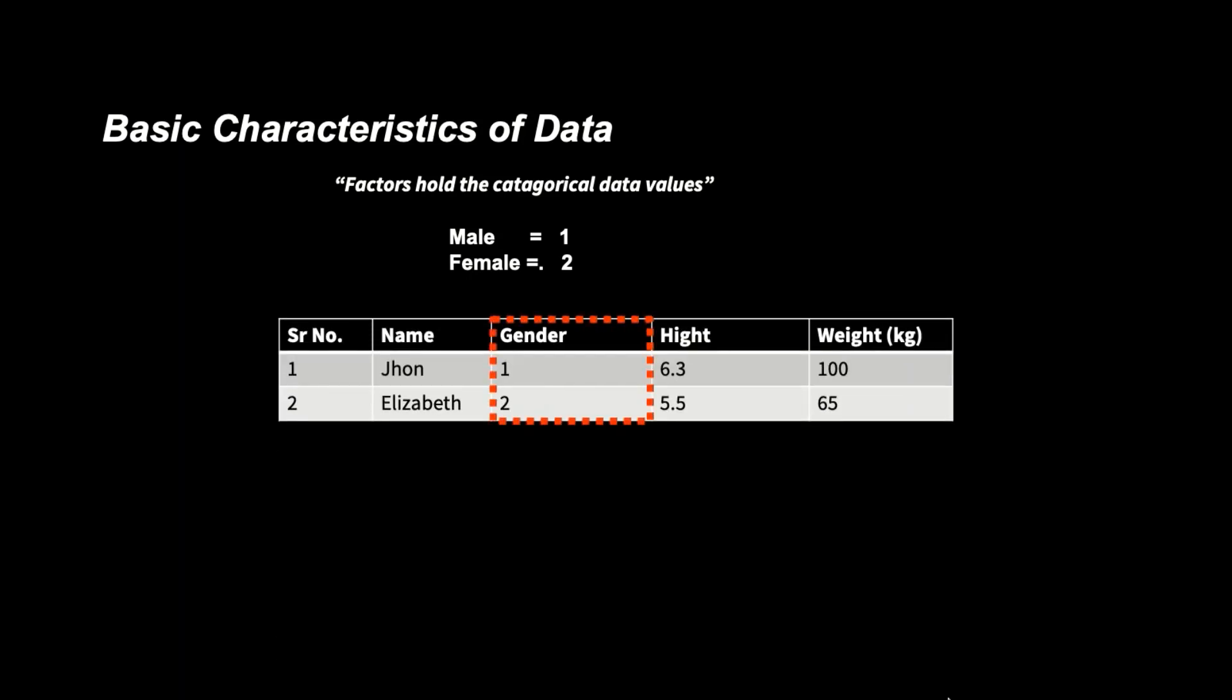Now, there is need to understand one very important term here, which is known as factor. The factor holds the categorical data in form of either numeric values or characters. Take an example that you are going to conduct a survey and there is a gender column in your data collection form. Rather than writing down male and female to specify the gender of the participant, you decided to write 1 for male and 2 for females. Although 1 and 2 are numeric values, but basically during data analysis, these will be considered as categorical data. Such values in the data are also known as factor.